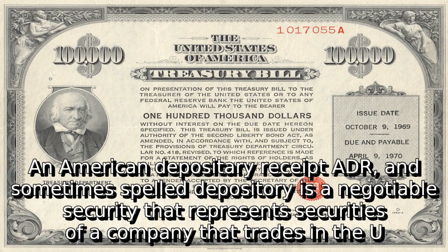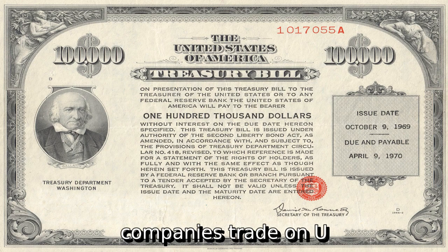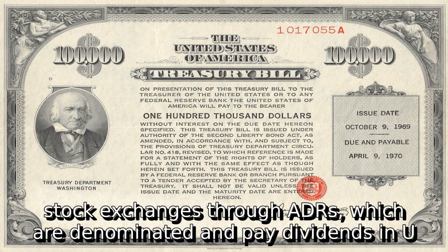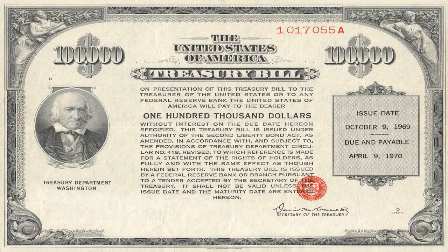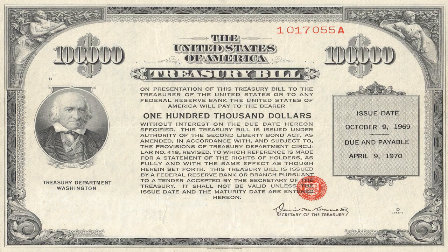An American Depository Receipt (ADR) — sometimes spelled Depository — is a negotiable security that represents securities of a company that trades in U.S. financial markets. Shares of many non-U.S. companies trade on U.S. stock exchanges through ADRs, which are denominated and pay dividends in U.S. dollars and may be traded like regular shares of stock.